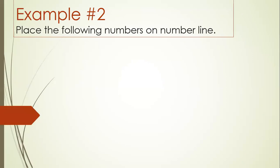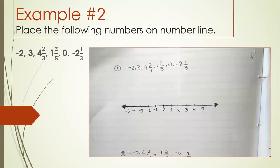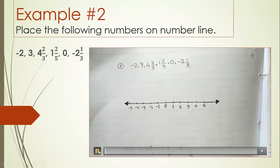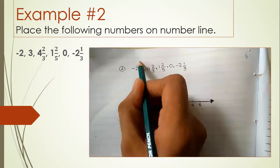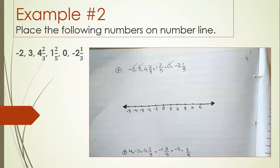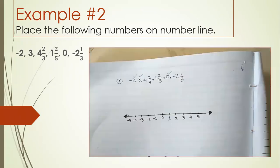Now we have example number two for the number line — place the following numbers on the number line. The numbers are in the form of integers as well as fractional forms. First, let's identify the integers: we have minus two, three, and zero — three integers to place on the number line.